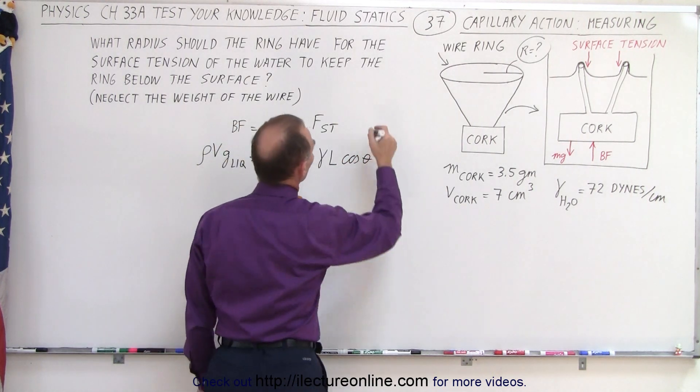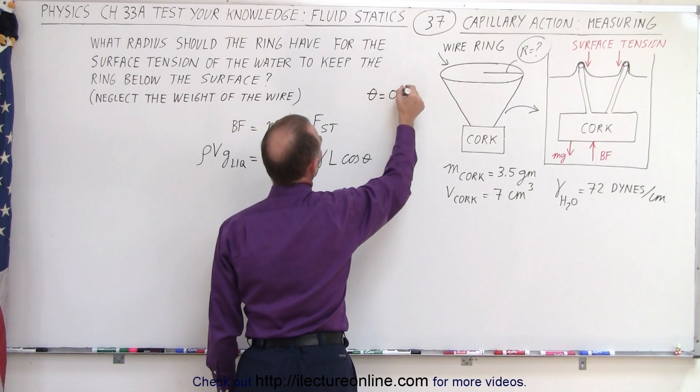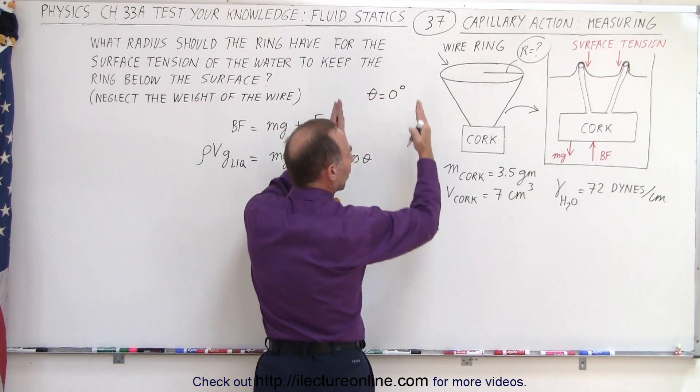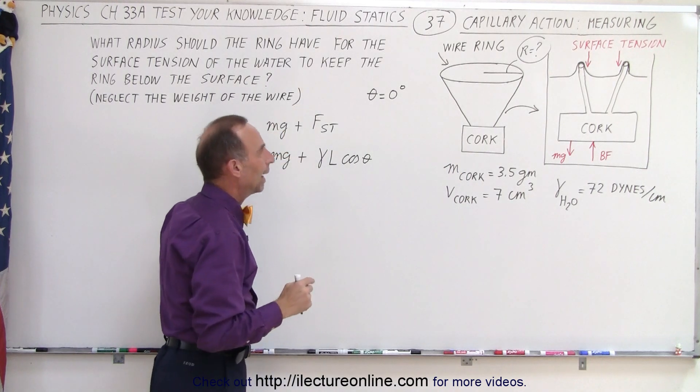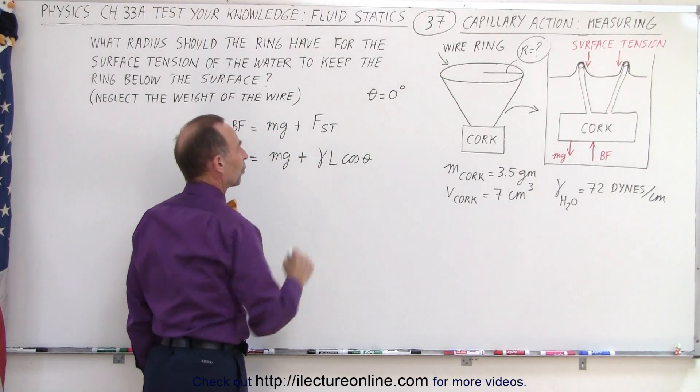Now in this case I believe we're going to let theta equal zero degrees, because the water level goes right up to the wire like that. Because of that, the cosine of zero is going to be one.